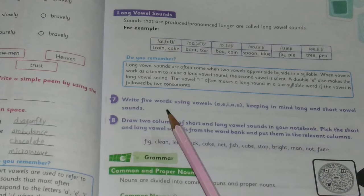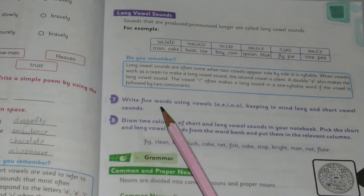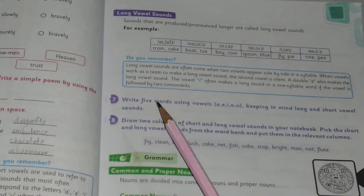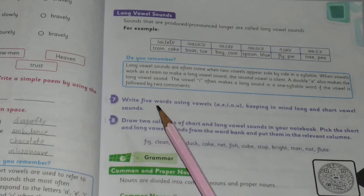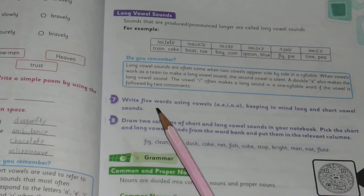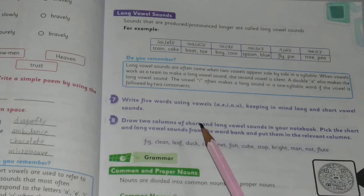Short vowel sounds: met, sit, kick, net, web, and pen. Five long vowel sounds are: tree, read, heat, and seat.